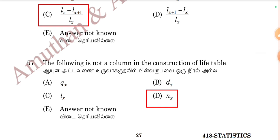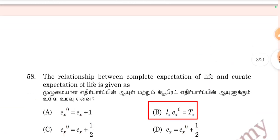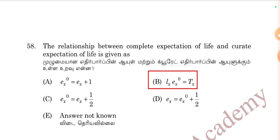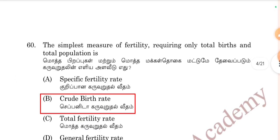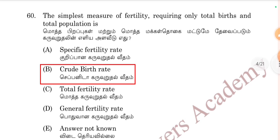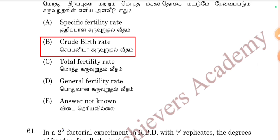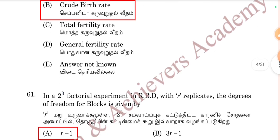The correct expectation of life is given by E-x-power-0 equal to E-x-plus-1, and LX E-x-0 minus DX. Option B is correct. Normally, a life table is constructed for age intervals of five years, ten years, five to ten years, or one year — Option D, one year. The simplest measure of fertility requiring only total births and total population is the general fertility rate — group birth rate is the correct answer.